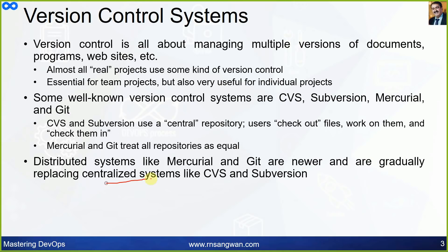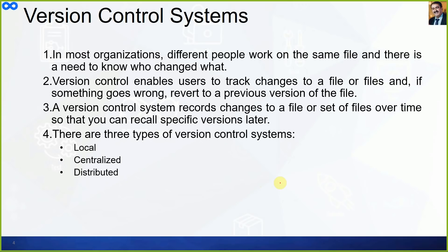In most organizations, different people work on the same file and there is a need to know who changed what — that is precisely the definition of a version. Version control enables users to track changes to a file and, if something goes wrong, revert to a previous version. A version control system records changes to a file or set of files over time so you can recall a specific version later.